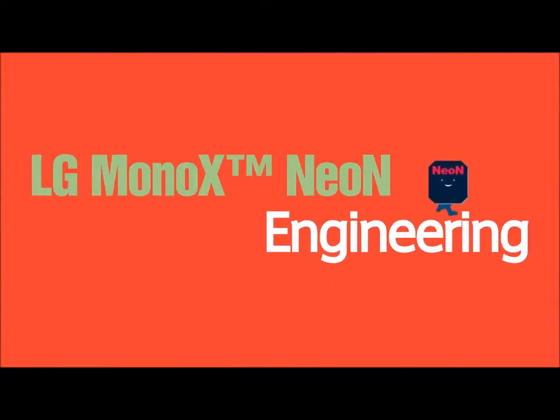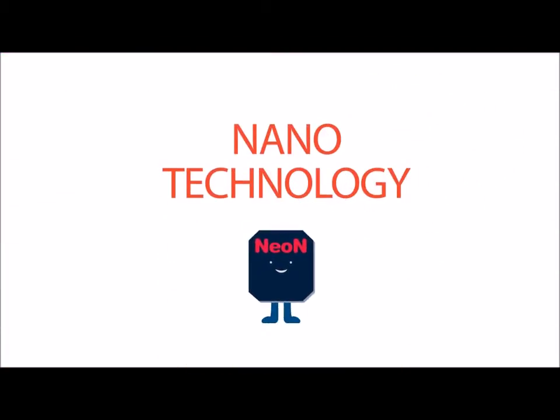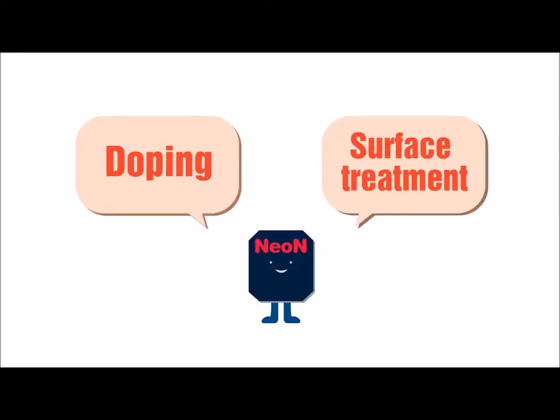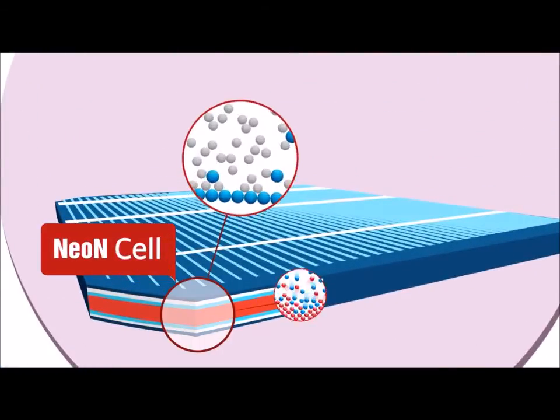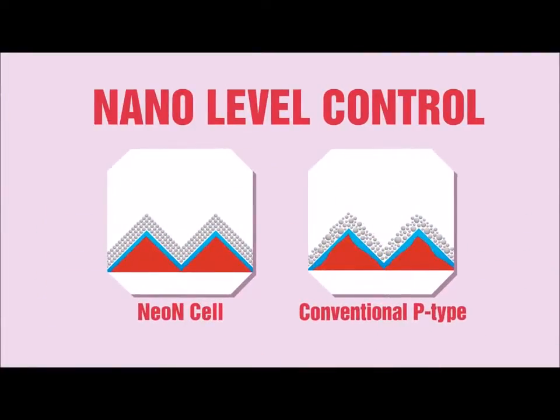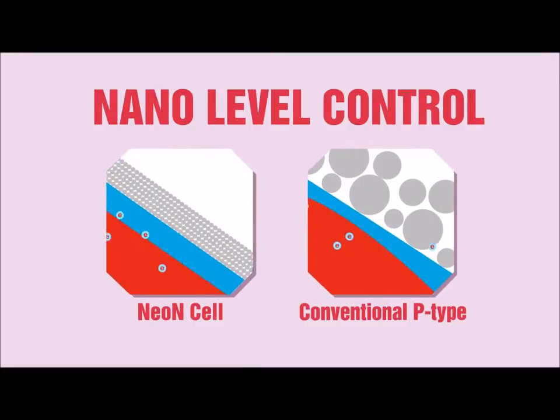LG Mono X Neon Engineering. Doping and surface are two processes that greatly affect the efficiency of the solar cell. A cutting-edge semiconductor technology was utilized in making neon. The process controlled at nano-level helped to reduce surface defects and create its distinct uniformity.